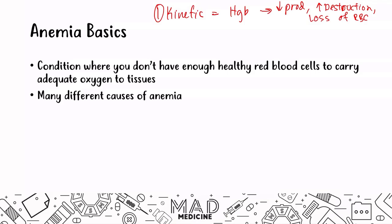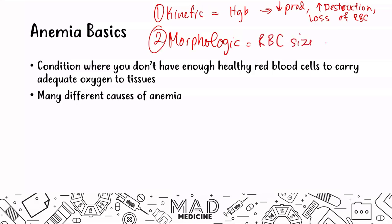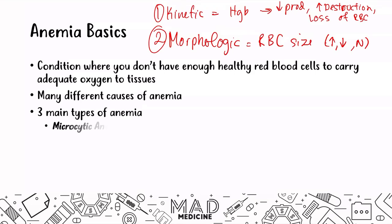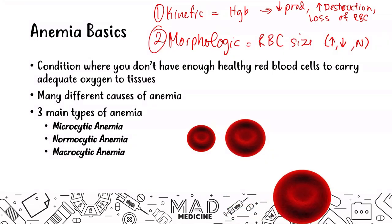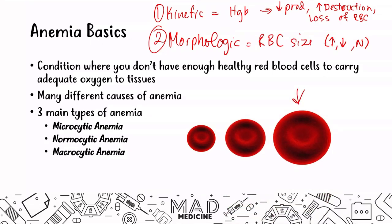But for step one and for these videos, we are going to be approaching this based off of the morphologic approach. The morphologic approach is going to look at the RBC size — the red blood cell size. So you could have increased, decreased, or normal size of red blood cell. Based off of this, there are three main types of anemias: microcytic anemia, normocytic anemia with a normal red blood cell, and macrocytic anemia with a very large red blood cell.